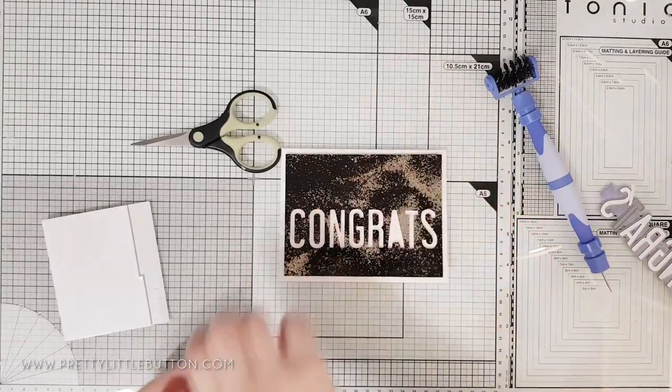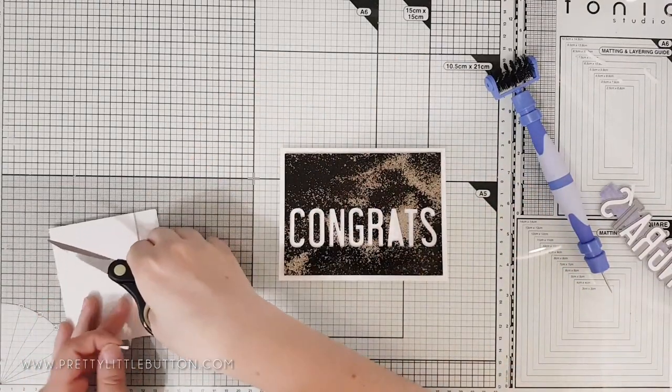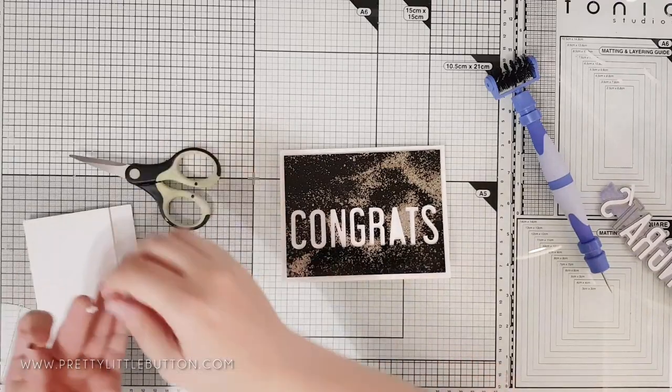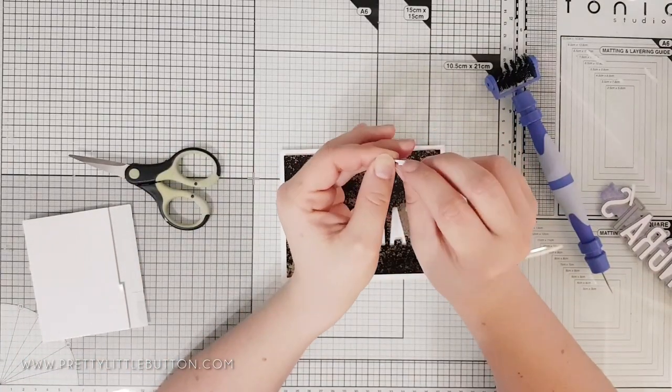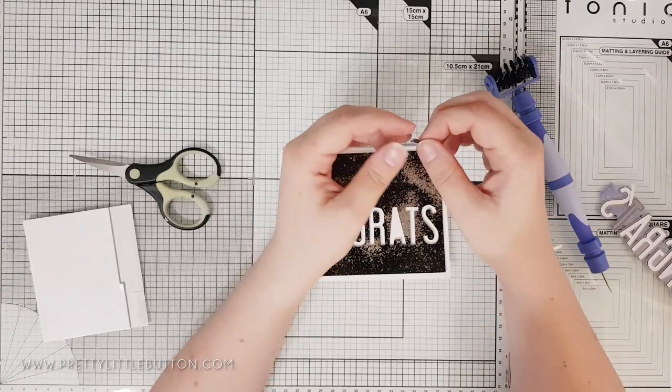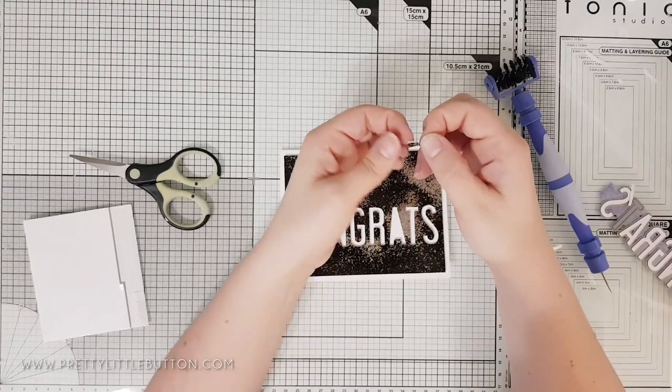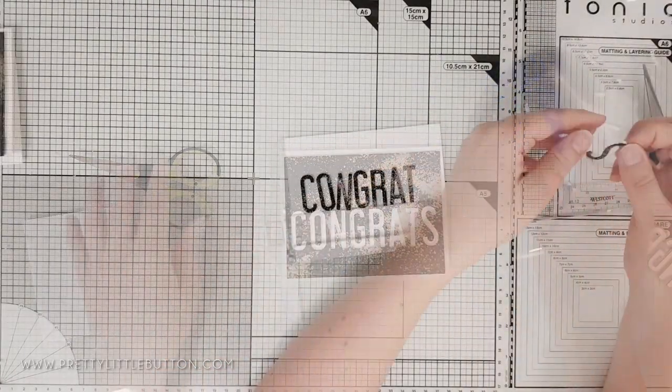So to turn this into a card, I'm foam mounting the die cut embossed panel onto a white card base. Because we kept the inners of the letters, I'm just going back in and adding those back onto the card, adding a little bit of foam behind them to raise them up to match the background.